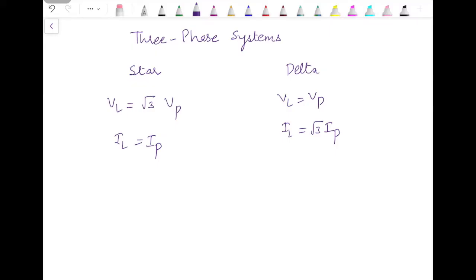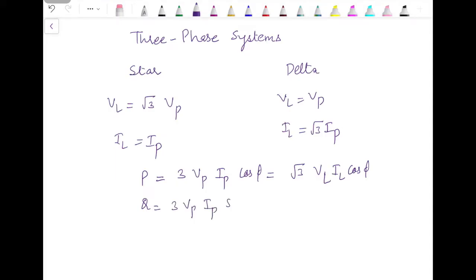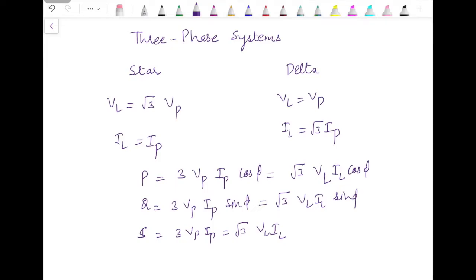We also found the expression for power in three-phase systems: active power is 3 times Vp·Ip·cos(φ) or root 3 times VL·IL·cos(φ). Reactive power is 3 times Vp·Ip·sin(φ) or root 3 times VL·IL·sin(φ). Apparent power is 3 times Vp·Ip or root 3 times VL·IL. In this video I'm going to solve four different numerical problems for the three-phase system.